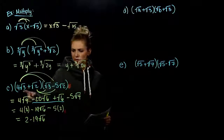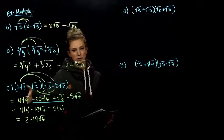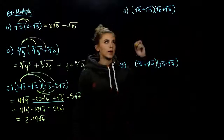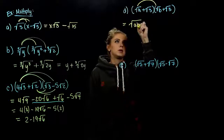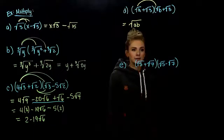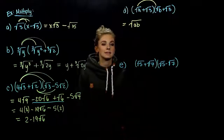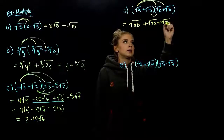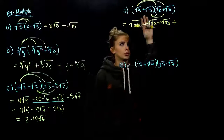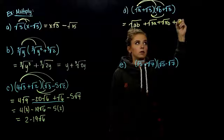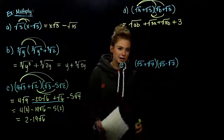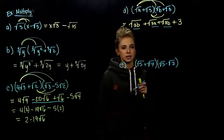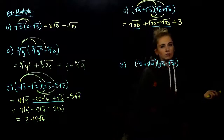Practice with another FOIL: binomial times binomial — (root a + root 3)(root b + root 3). First: square root of ab. Outer: plus square root of 3a. Inner: plus square root of 3b. Last: root 3 times root 3 gives the square root of 9, which is 3. Can we combine any terms? None of the radicands match exactly, and we can't break them down to match, so that one is done.